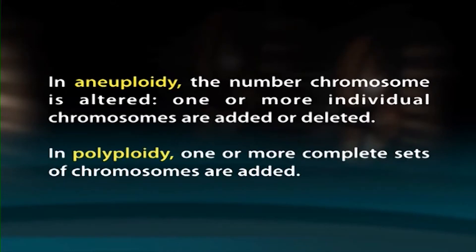In aneuploidy, the number of chromosomes is altered — one or more individual chromosomes are added or deleted. In polyploidy, one or more complete sets of chromosomes are added. Some organisms such as yeast possess a single chromosome set (1N) for most of their life cycles and are referred to as haploid, whereas others possess two chromosome sets and are referred to as diploid (2N). A polyploid is any organism that has more than two sets of chromosomes — that is 3N, 4N, 5N or more.